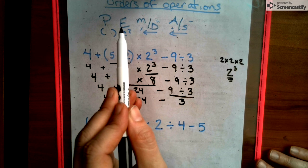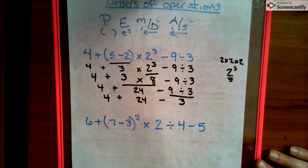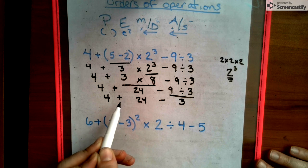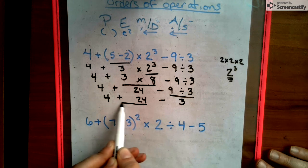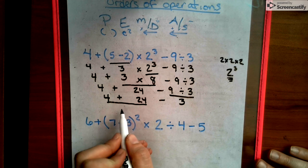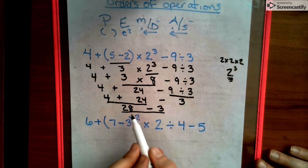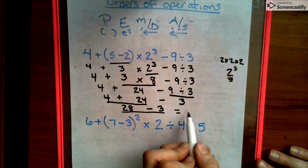So our P is done. Our E is done. Our M and D step is done. Now we have our A and our S, whichever is closest to the left. Now addition is closest to the left. So 24 plus 4 is 28. And then we bring down everything else we did not use. And 28 minus 3 is 25. That's that.